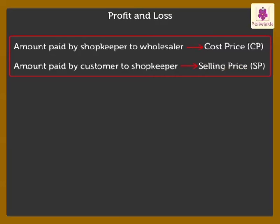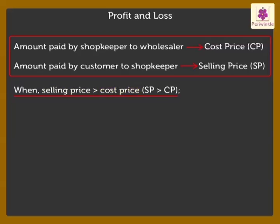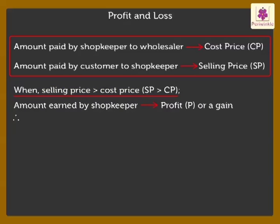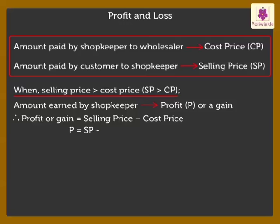If Mr. D'Souza sells his goods for a price higher than the cost price, he earns an extra amount. It is called Profit or a Gain. Therefore, Profit or Gain is equal to selling price minus cost price, or P = SP minus CP.